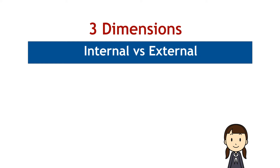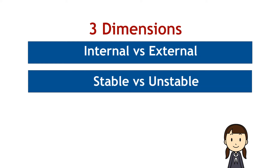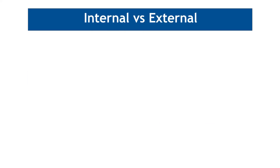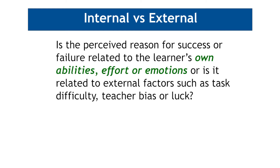These are internal versus external, stable versus unstable, and controllable versus uncontrollable. The first dimension is internal versus external. In other words, is the perceived reason for success or failure related to the individual learner's own abilities, effort, or emotions? Or is it related to external factors such as task difficulty, teacher bias, or luck?